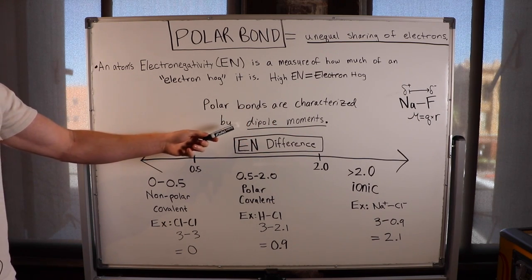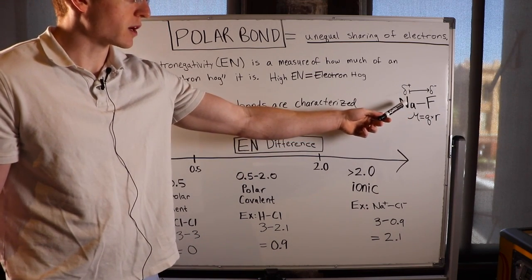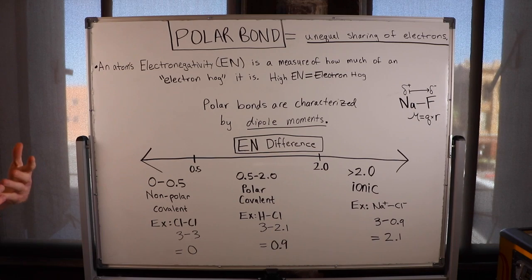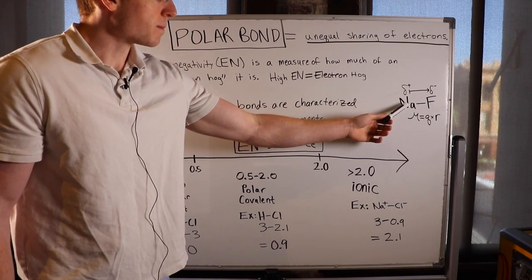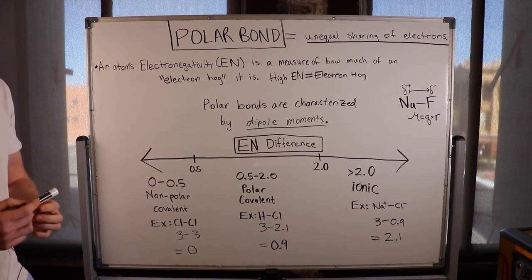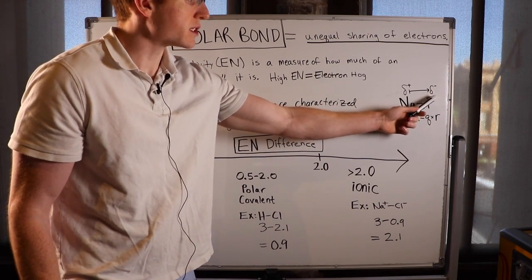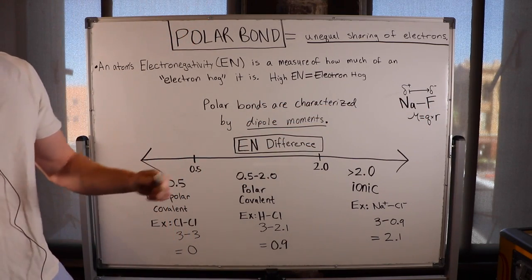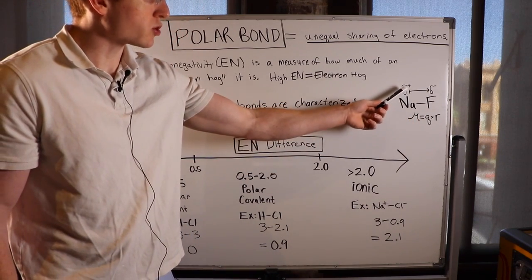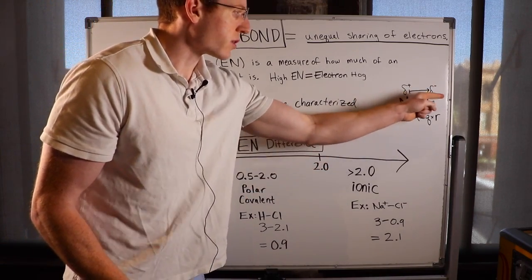Polar bonds are characterized by dipole moments. Take for example the compound sodium fluoride. Fluoride is the most electronegative element of them all, and it is so much more electronegative than sodium that it's going to hog all of the electrons. Since electrons are negatively charged, this results in fluorine having a partial negative charge — that's what the sigma negative represents — while sodium is left with a partial positive charge. This creates a net dipole moment towards the fluorine.